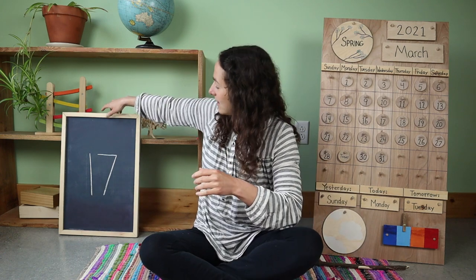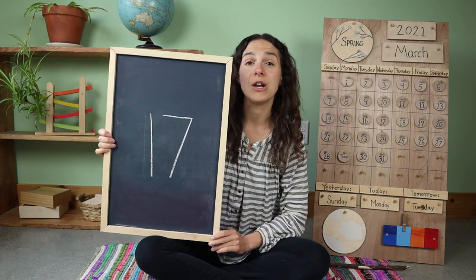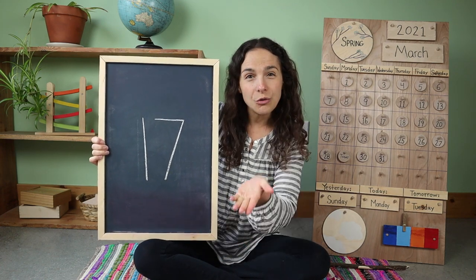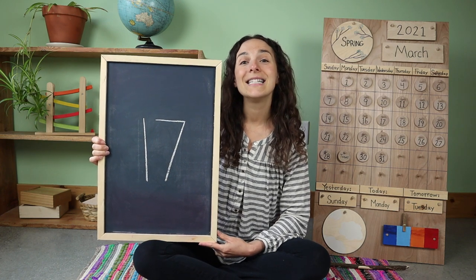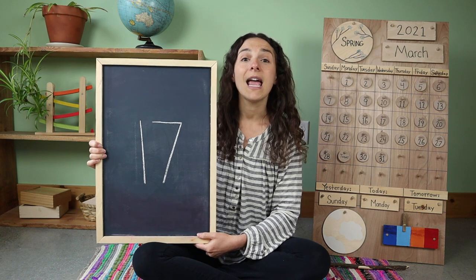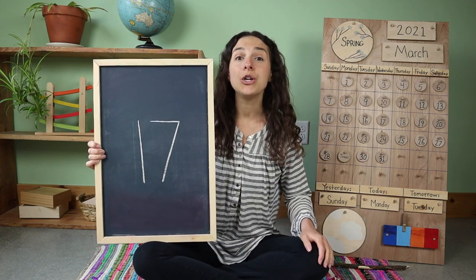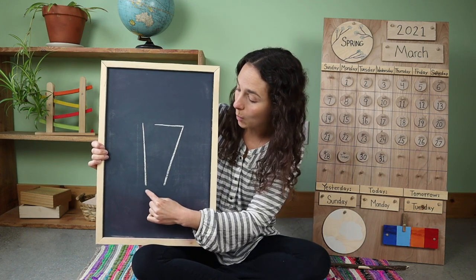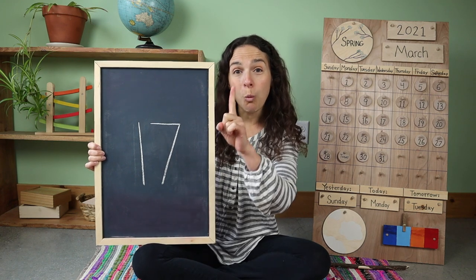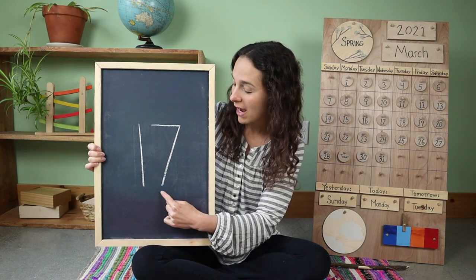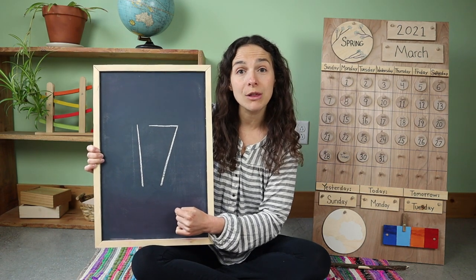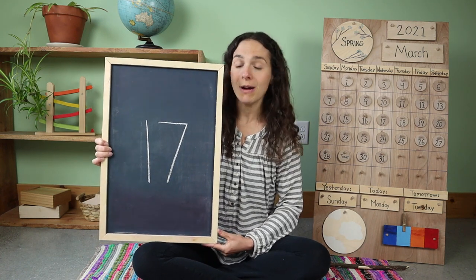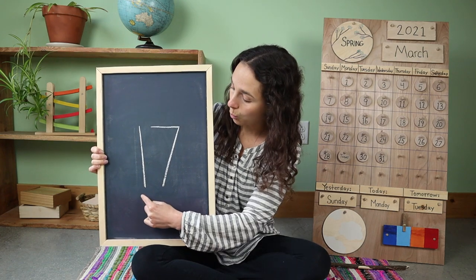Now let's move on to the number of the week. We also have a new double digit number to talk about. Take a look at this number — do you know what number this is? 17. This is the number 17. And because 17 is a double digit number, you have to write two numbers when you write 17. Can you show me with your fingers what number this is? One. And after you write the number one, you have to write this number. Can you show me? Seven. When you write 17, you write the numbers one, seven.